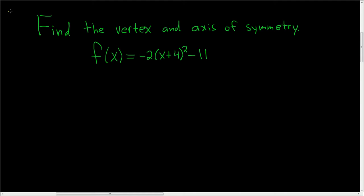Find the vertex and axis of symmetry. Let's go ahead and work this out. So the general formula for a parabola in what's often called standard form is f(x) equals a(x minus h) squared plus k.